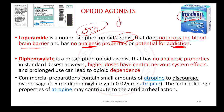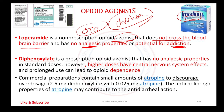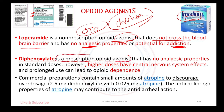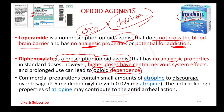Moving to diphenoxylate: it is combined with atropine and requires a prescription. Diphenoxylate is an opioid agonist with no analgesic effect, but at higher doses there is a risk of addiction and dependence. This is the reason a prescription is required for diphenoxylate — because of the risk of dependence and addiction at higher doses.